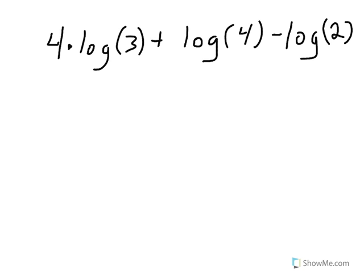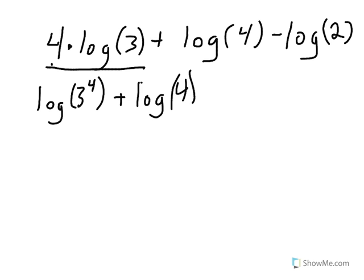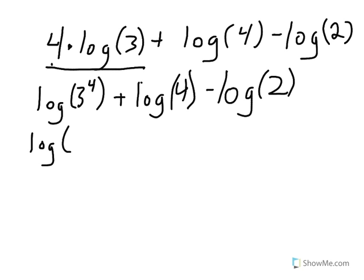Now let's look at an example where we put it all together. We still follow order of operations. There are no parentheses to simplify and no exponents, so we move to multiplication. The first term is 4 times log(3), which we condense using the power property to get log(3 to the 4th power). Then, since 3 to the 4th is 81, we rewrite the expression as log(81) plus log(4) minus log(2).